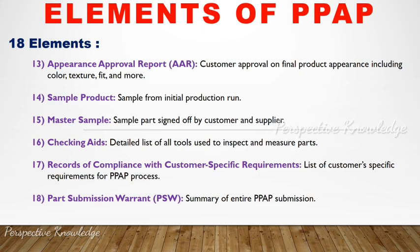The master sample is the reference used during production runs. If any defects are found in parts, they are compared against the master sample. The fifteenth element is Checking Aids — a detailed list of all tools used to inspect and measure parts. The sixteenth is Records of Compliance with Customer Specific Requirements — a list of customer requirements within the PPAP process. The seventeenth is Part Submission Warrant (PSW) — a summary of the entire PPAP submission, and the most important element of PPAP.